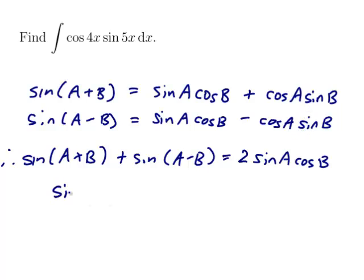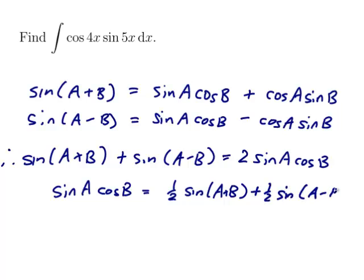So what have we got? We've got sin A cos B is a half of sin(A+B) plus a half of sin(A-B). Alright.